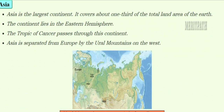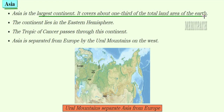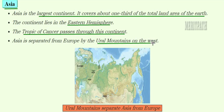Let's study in detail about these seven continents. The first one is Asia. Asia is the largest continent out of all seven, and it covers one-third of the total land area of the earth. Asia lies in the eastern hemisphere and the Tropic of Cancer passes through it. Asia is separated from Europe by the Ural Mountains on the west side.